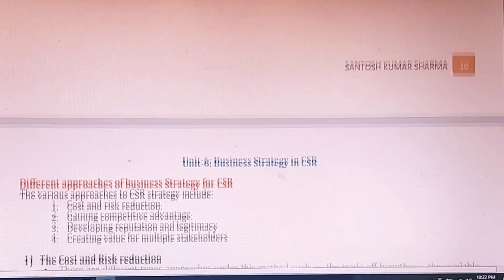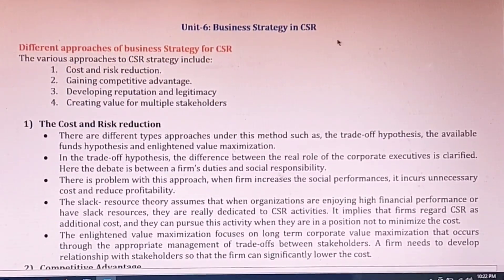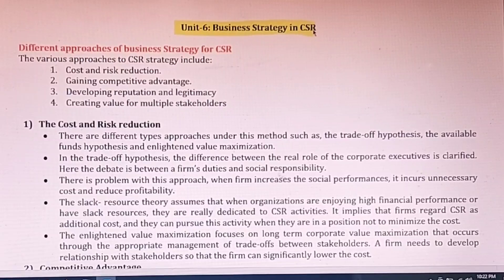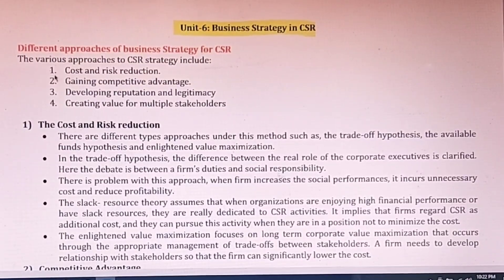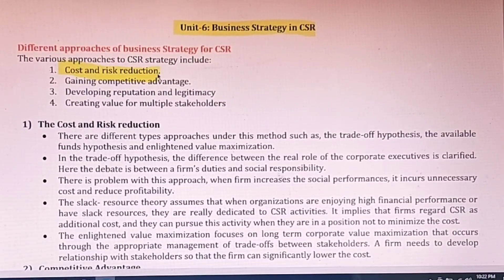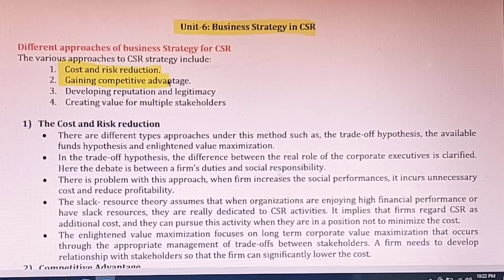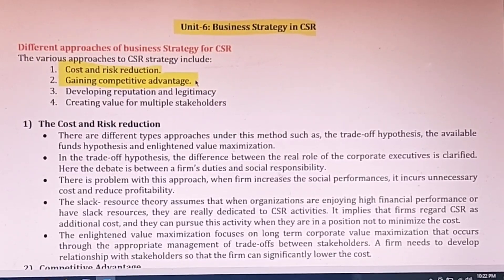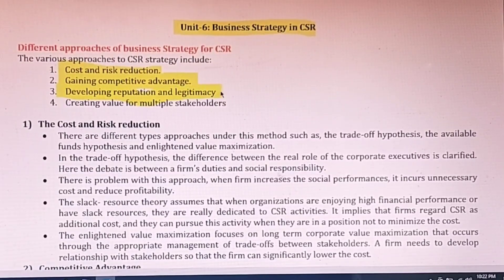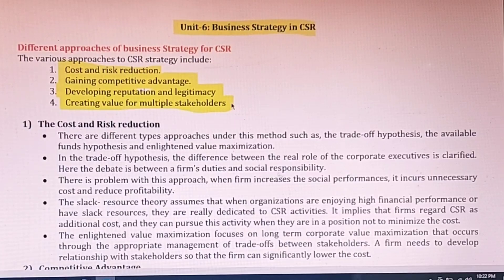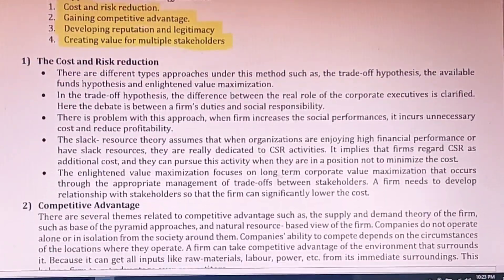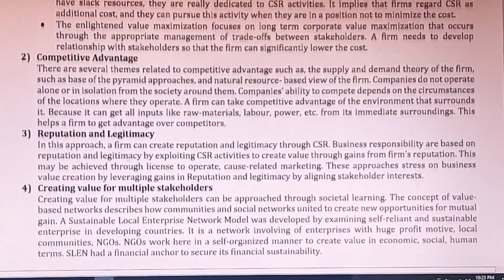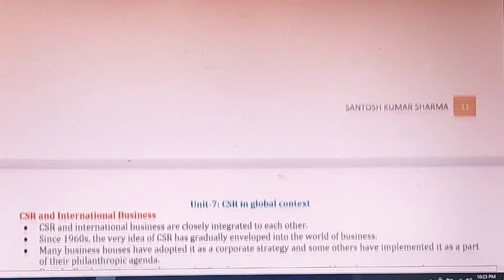Unit 6 is on business strategy and CSR. The different approaches to business strategy include: first, cost and risk reduction; second, gaining competitive advantage over competitors — very important; third, developing reputation and legitimacy of the company; and fourth, creating value for multiple shareholders so they are interested in investing money in the company. You need to define how each of these approaches works in practice.